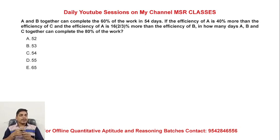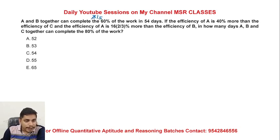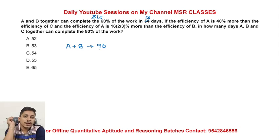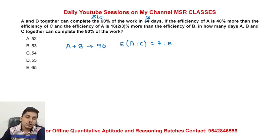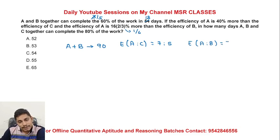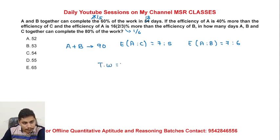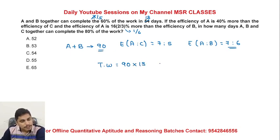A and B together can complete 60% of work — that is 3/5 of the work — in some time. 18/5 times 90 gives 90%. A and B together complete 90% of the work. Efficiency of A is 50% more than efficiency of C. Efficiency ratio of A to B is given as 7 to 6. Total efficiency is 13. In how many minutes can A and B together complete the total work?